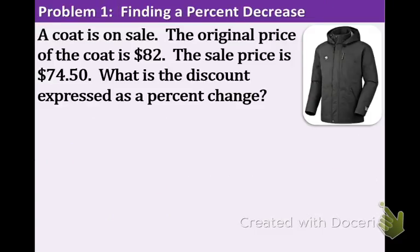A coat is on sale. The original price of the coat is $82, and the sale price is $74.50. What is the discount expressed as a percent change? First, let's figure out if this is increase or decrease. When you buy something at the store, what does a sale mean? If something is on sale, the price is decreasing, right? You don't want to buy something for higher than what it's going for. So we're finding the percent decrease.